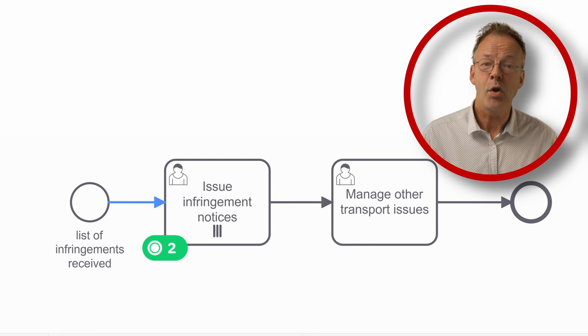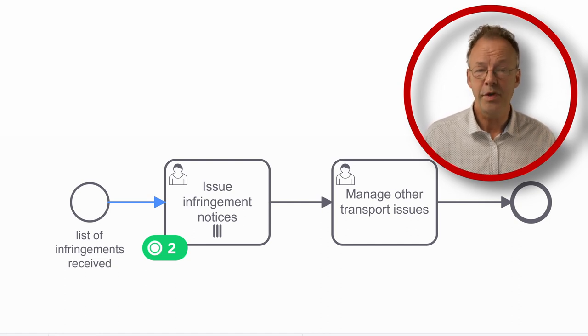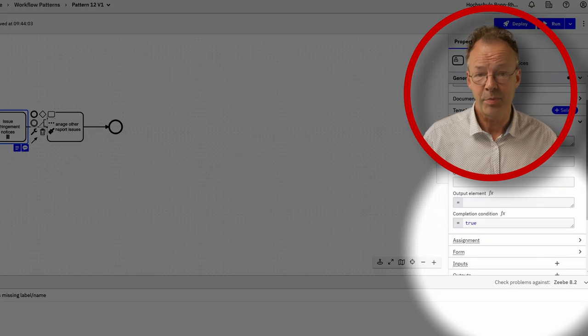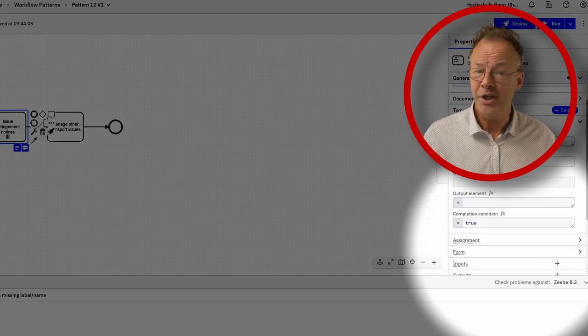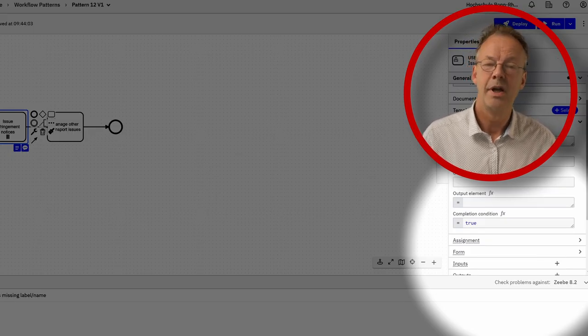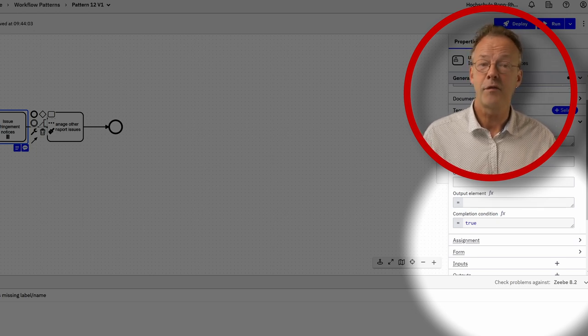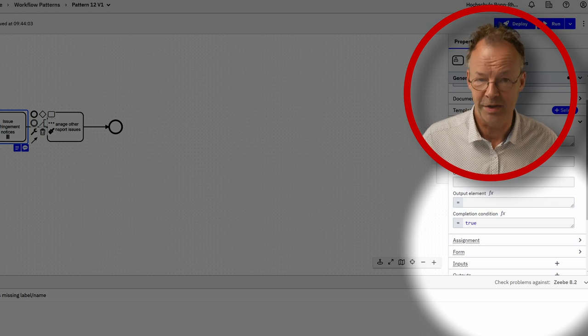I have created a small workflow with a list of two infringements received. In order to continue as soon as possible we need to set the completion condition to true. However, this condition is first evaluated after the first multiple instance work item is completed.